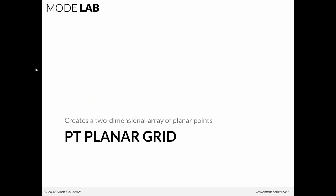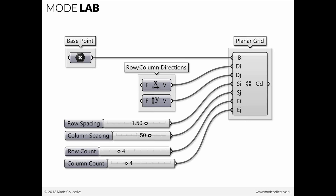Let's take a look at how that works in Grasshopper. We're going to look first at the PT Planar Grid Component, which creates a two-dimensional array of planar points. To do that, you have to define where you'd like that grid to be in the world — its reference point — what direction the rows should be moving, the columns, what is the spacing of rows and columns, and what number of points you'd like in row and column.